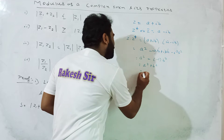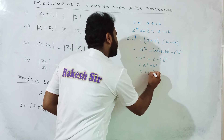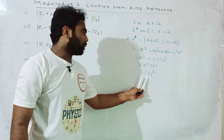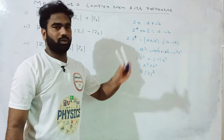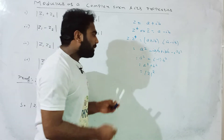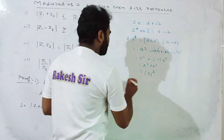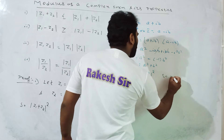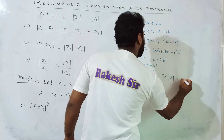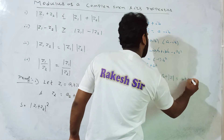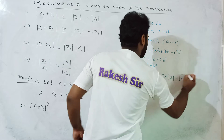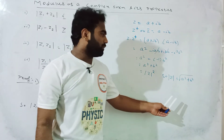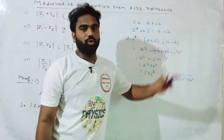Now, the modulus of a complex number, whole squared, equals z into z-star, which equals a squared plus b squared.